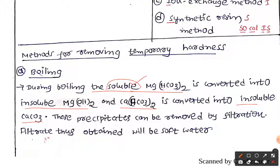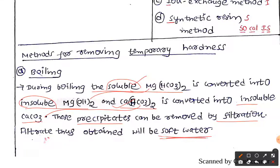In water, we have magnesium bicarbonate and calcium bicarbonate in soluble form. They are converted into insoluble magnesium hydroxide and calcium carbonate respectively. Once you have the insoluble precipitate, you can easily do filtration and obtain soft water.